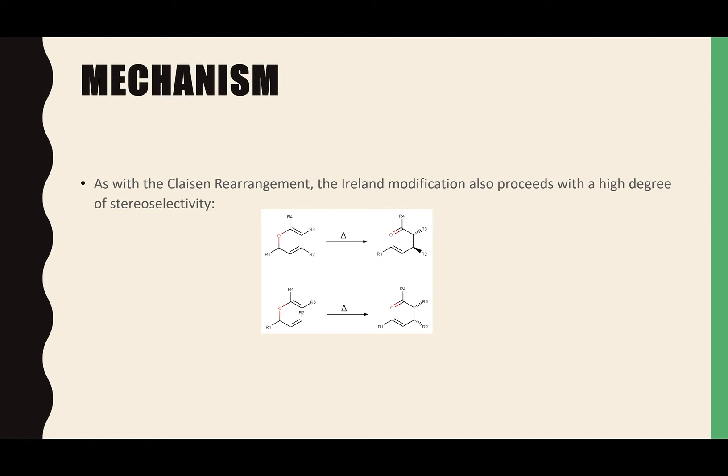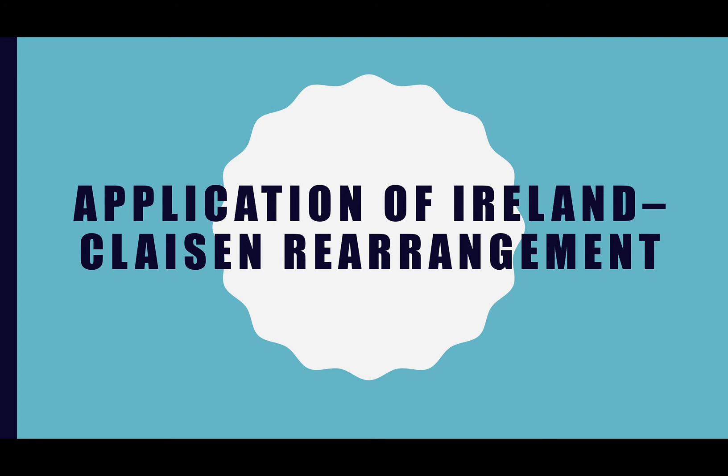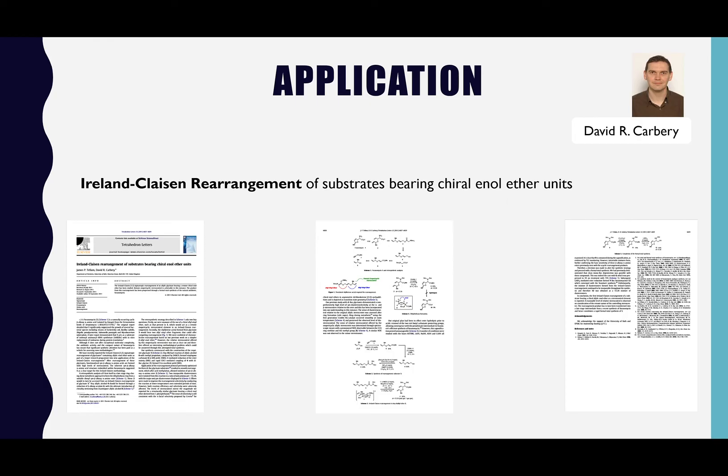According to the Woodward-Hoffmann rules, as with the Claisen rearrangement, the Ireland modification also proceeds with a high degree of stereoselectivity. Now let's go into the application of the Ireland-Claisen rearrangement — specifically the rearrangement of substrates bearing chiral units.